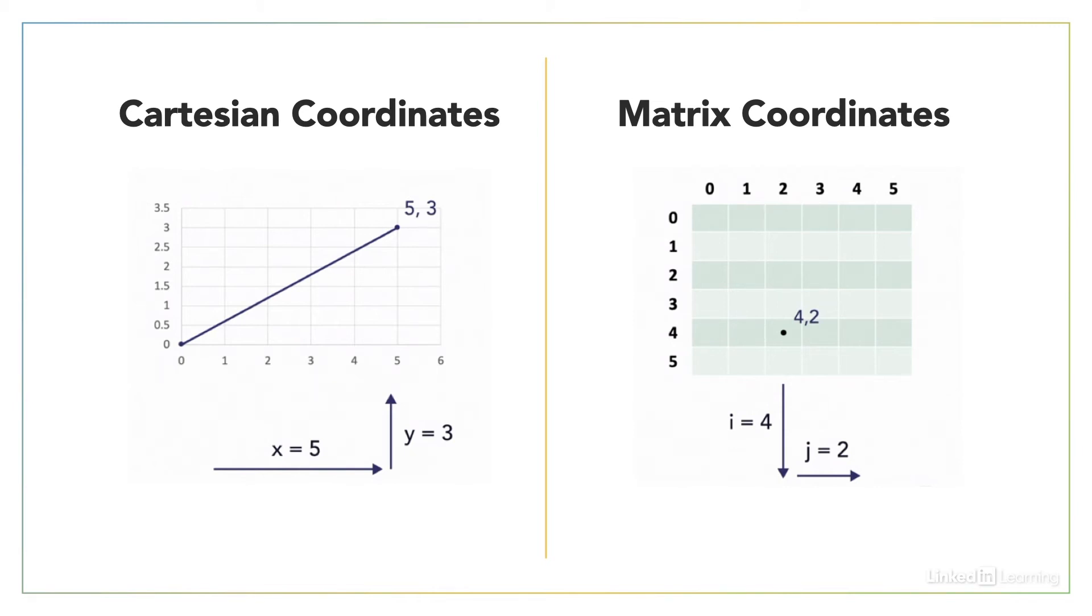And then for the J, that's pretty much like the old X coordinate, so that increases left to right. So for example, you can see on the right hand side of this slide that we have a dot at coordinates I equals 4, J equals 2. That means row 4, column 2.